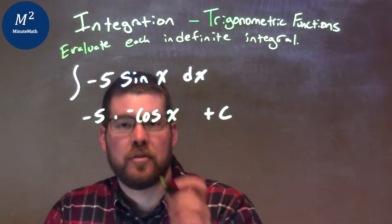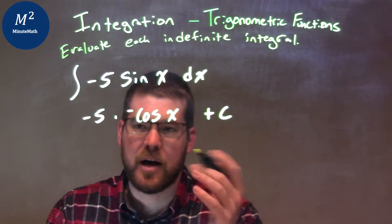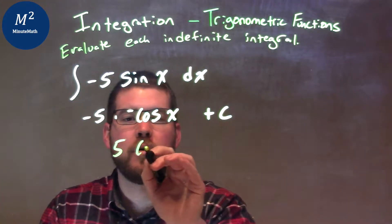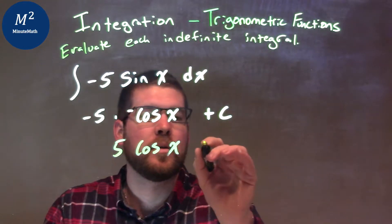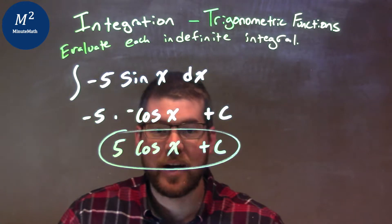Now we can simplify this a little bit. Negatives, alright, negative 5 and negative cosine multiply together, it's positive. So we have 5 cosine of x plus c, and that right here is my final answer.